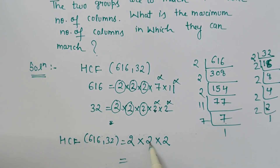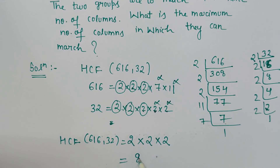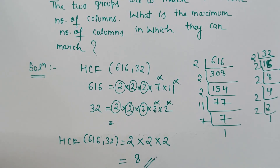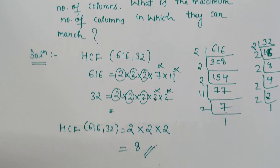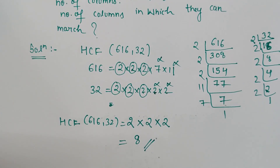Multiplying the common factors we get 2 × 2 × 2 = 8. So the HCF of 616 and 32 is 8, and that is the answer for the given question. Thank you and have a nice day.